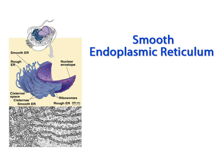There is a second type of endoplasmic reticulum found in the cytoplasm called smooth endoplasmic reticulum. It is referred to as smooth ER because, unlike the rough ER, it does not have ribosomes attached to it, giving it a smooth appearance.